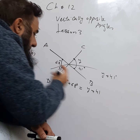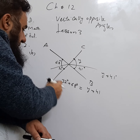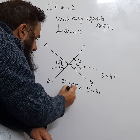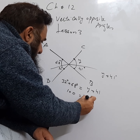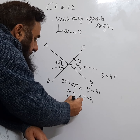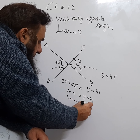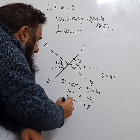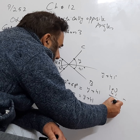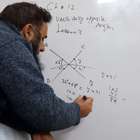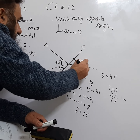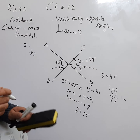Since both whole angles are vertically opposite and therefore equal: Y plus 41 equals 100. We need Y, so moving 41 to the other side: Y equals 100 minus 41, which gives Y equals 59. So Y is equal to 59.